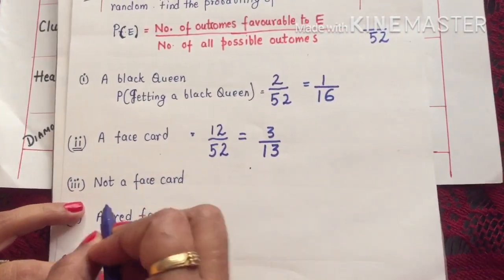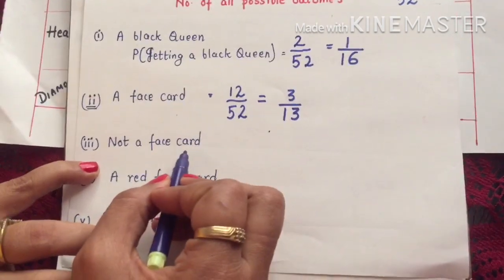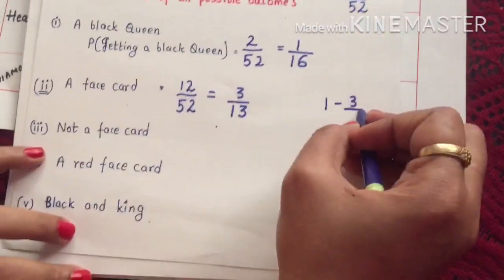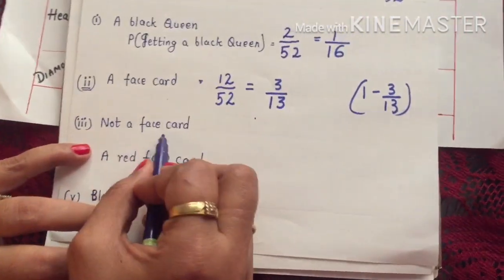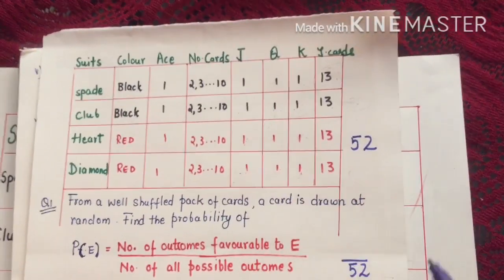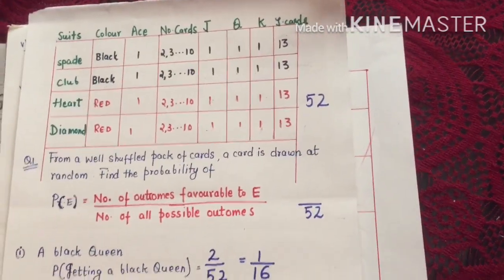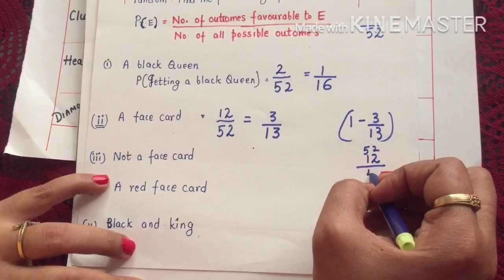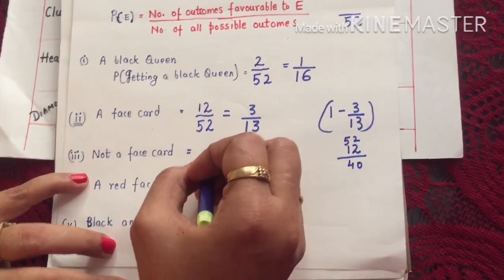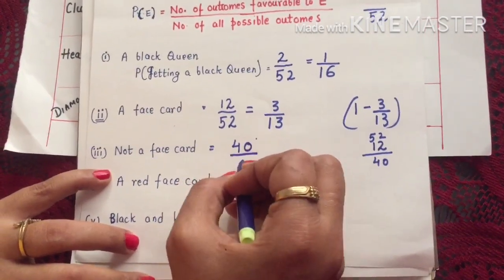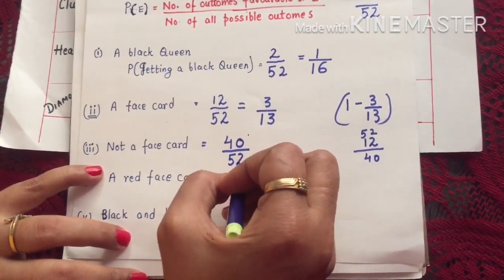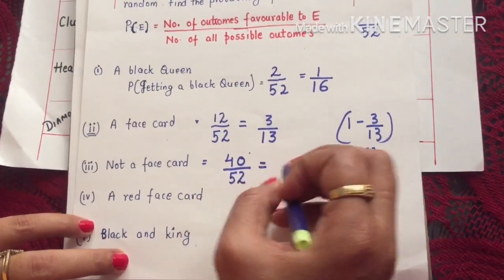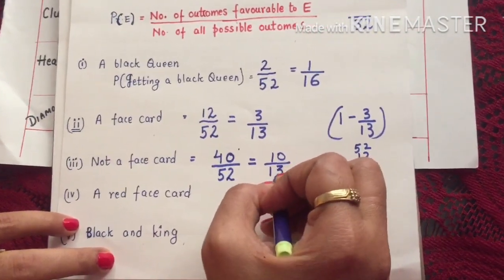What is the probability of getting a card that is NOT a face card? You can do it two ways: either subtract 1 minus 3/13, or directly count. There are 12 face cards and 52 total cards, so non-face cards are 40. Favorable outcomes are 40 out of 52, which reduces to 10/13.